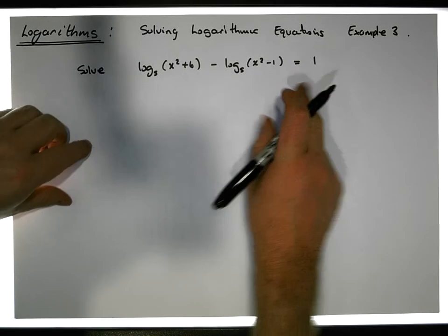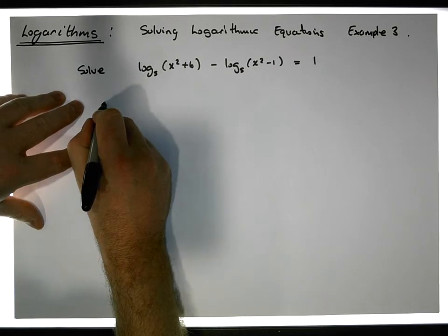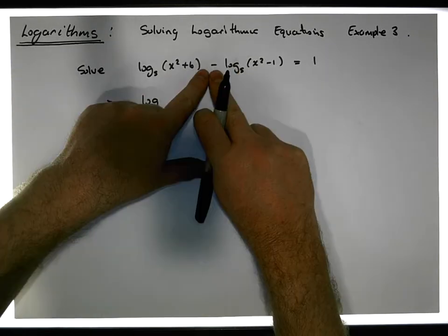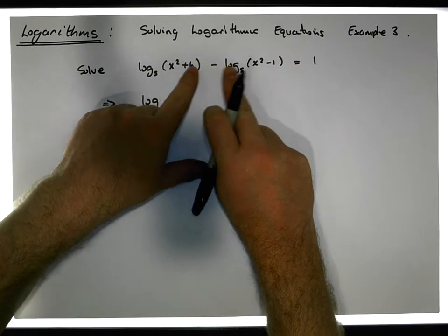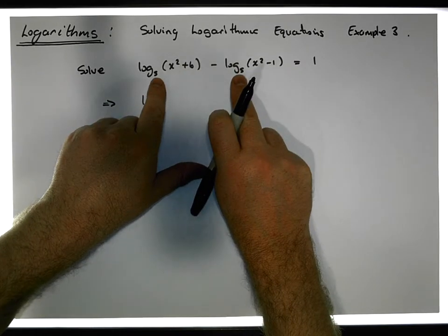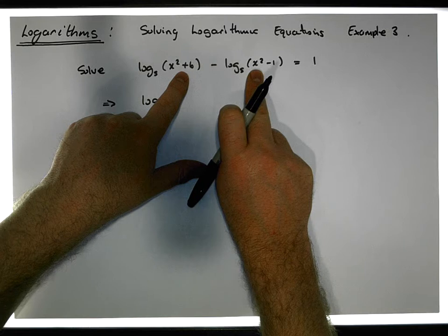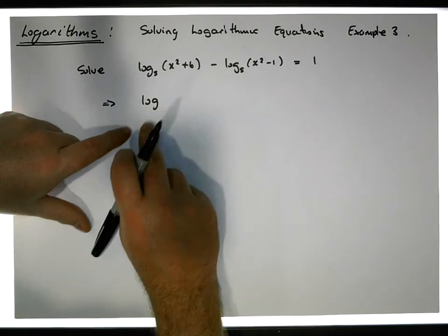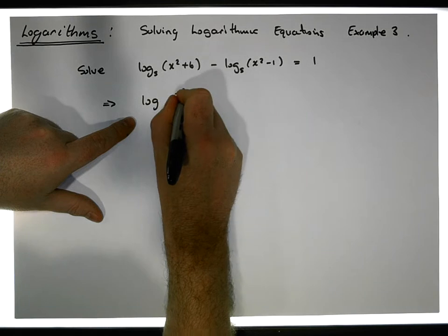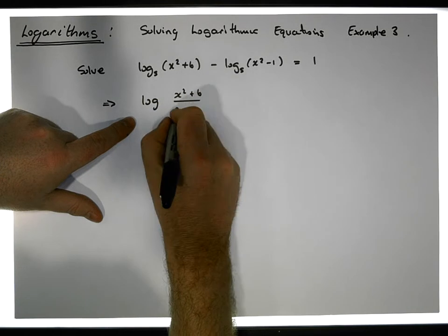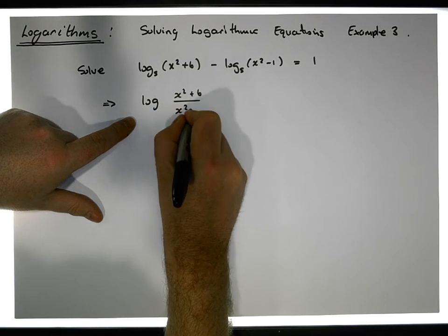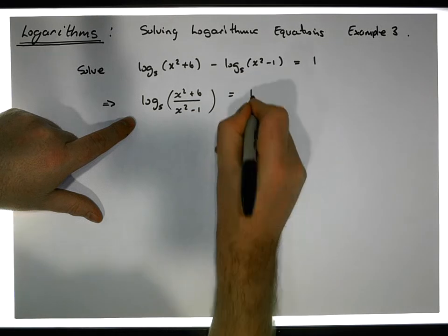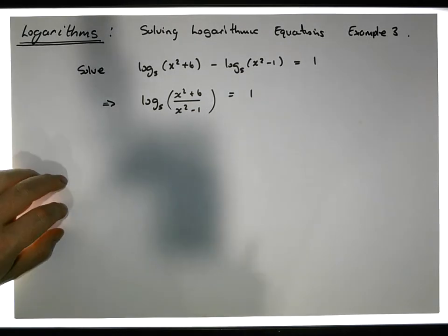We have the difference between two logarithms to the same base, so we can convert this back into a quotient using the quotient rule. This gives us log of (x squared plus 6) divided by (x squared minus 1) to the base 5, and this must be equal to 1.